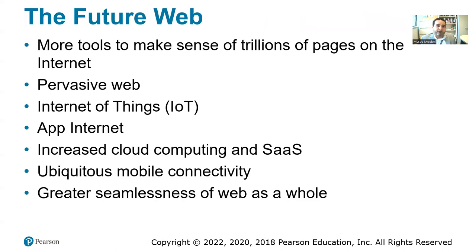The future of the web involves more tools to make sense of trillions of pages on the internet. One recently discussed tool is ChatGPT, which makes sense of trillions of pages using AI or artificial intelligence. We also have the pervasive web — for example, city traffic lights. Then we have the internet of things: sensors connected to the internet that transmit information without human-computer interaction. The app internet is also notable — web browsers are much slower than using a dedicated app; using Facebook through a browser is not as intuitive or optimized as using the app itself.